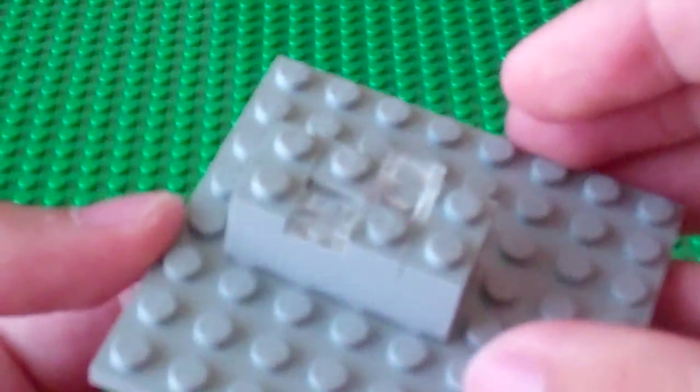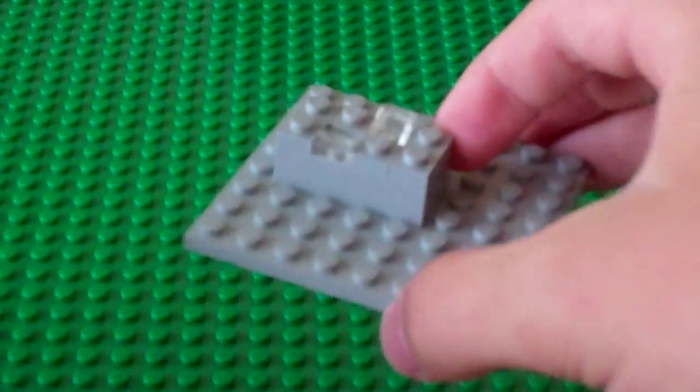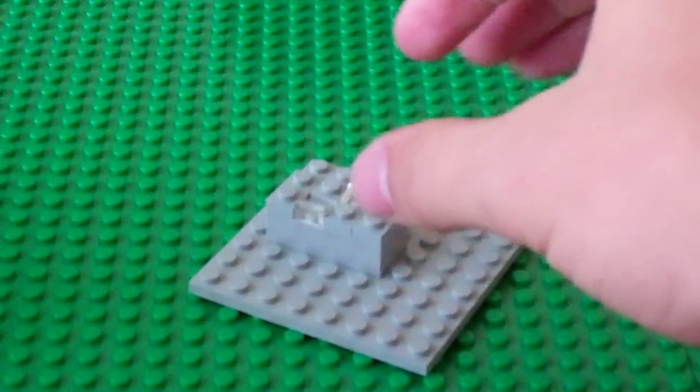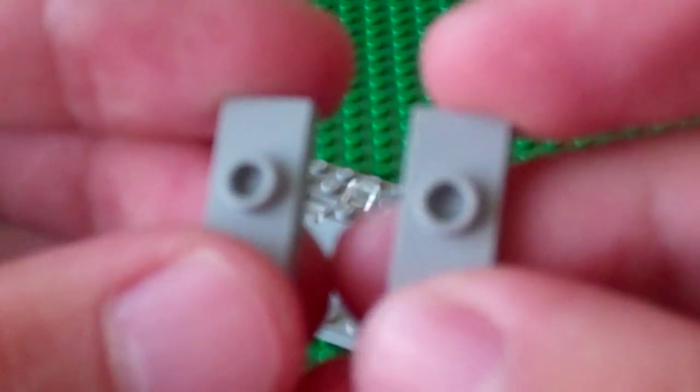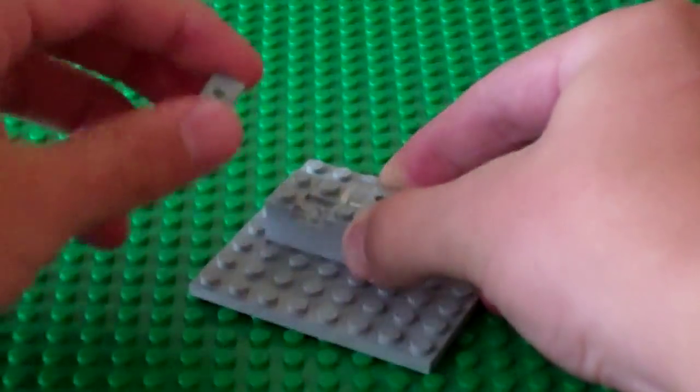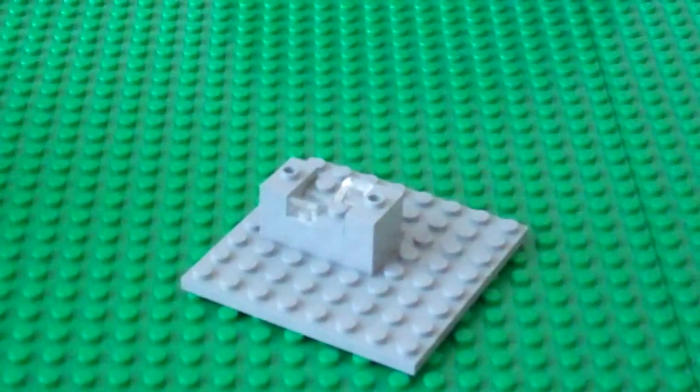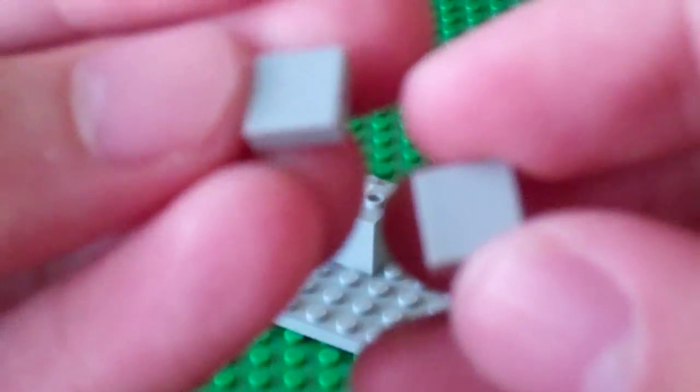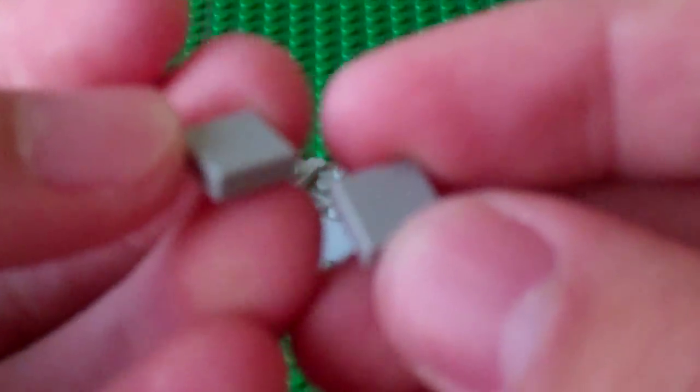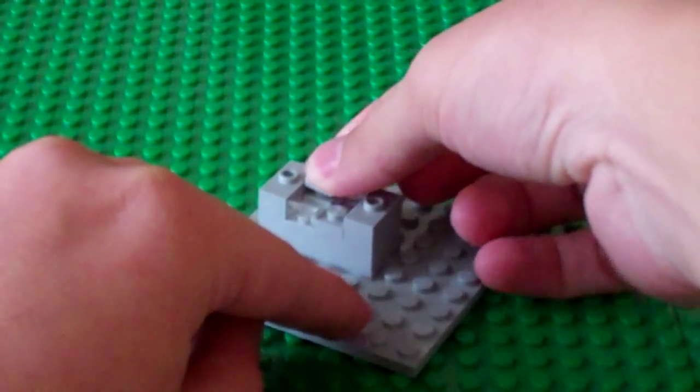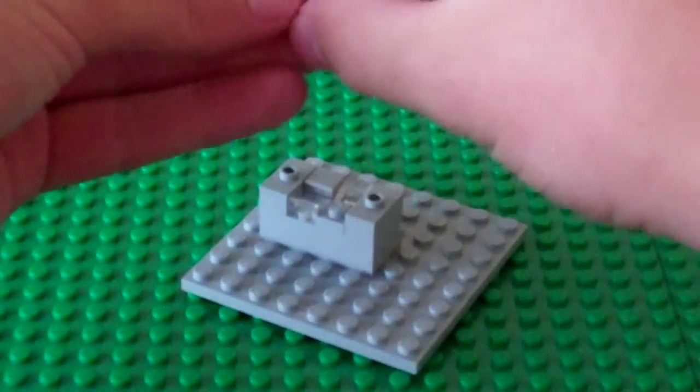So you'll be looking like this. And then I'm going to get 2 light grey jumper plates and put those on both ends. Then I'm going to get 2 1x1 light grey tiles and fill in the rest of the space there.